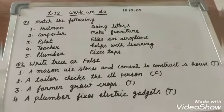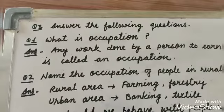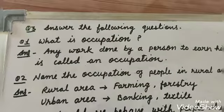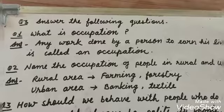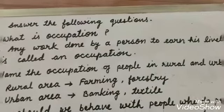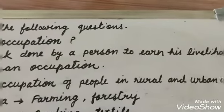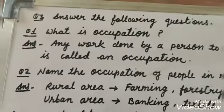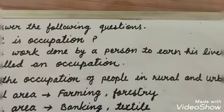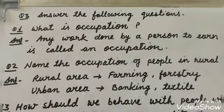Okay children, now see the question and answer. Question number one: what is occupation? Occupation means — when someone does a job, they say occupation. Any work done by a person to earn his livelihood is called an occupation. Koi bhi kaam jo karta hai person, paisa kamanay ke liye — use kehte hain occupation.